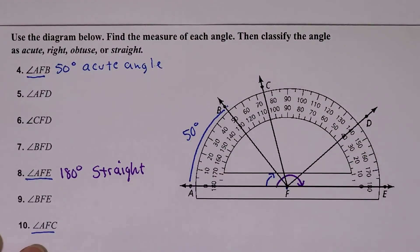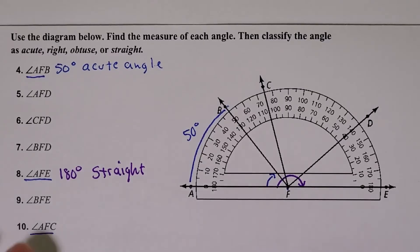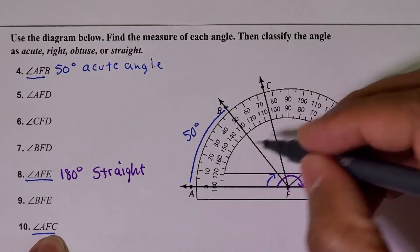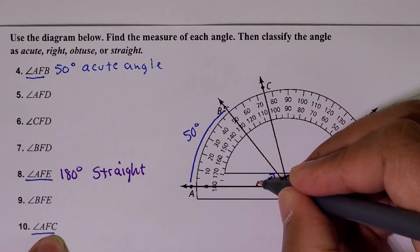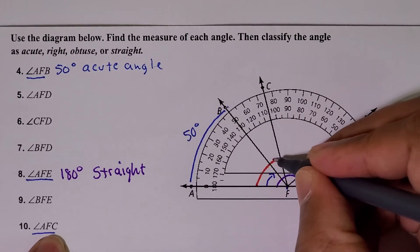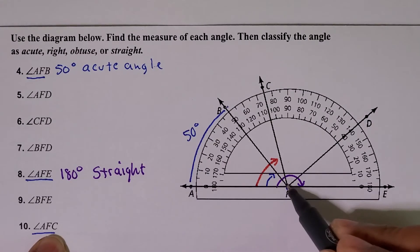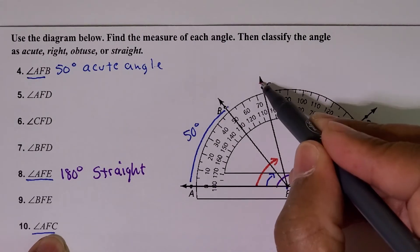Last problem, number 10, AFC. So for angle AFC, let's see A, F, C, so we're going from here all the way to here. So again, this one starts from zero, and then we see that it's between 70 and 80. It's right halfway between 70 and 80.